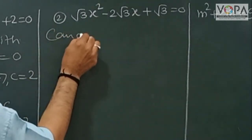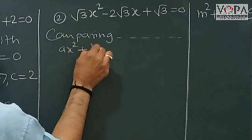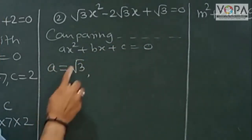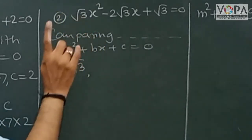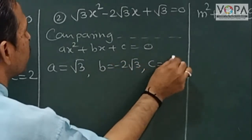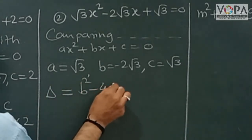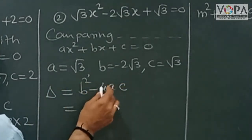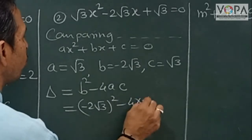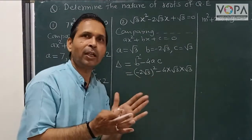Comparing with the standard form ax² + bx + c = 0. The value of a is root 3 — this is the coefficient of x squared. The value of b is minus 2 root 3, and the value of c is root 3. Now find the value of delta: delta is equal to b² minus 4ac, which is minus 2 root 3 bracket squared, minus 4 into root 3 into root 3.